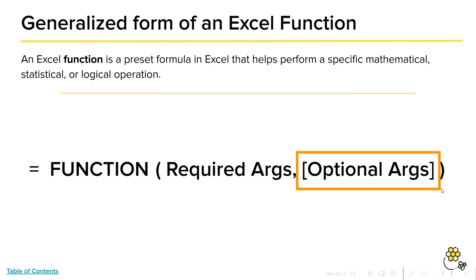On the other hand, when you see arguments with brackets around them, these are optional arguments. These arguments are not necessary for the function to operate. However, they are often used to refine a function's output or select an option inside of the function.